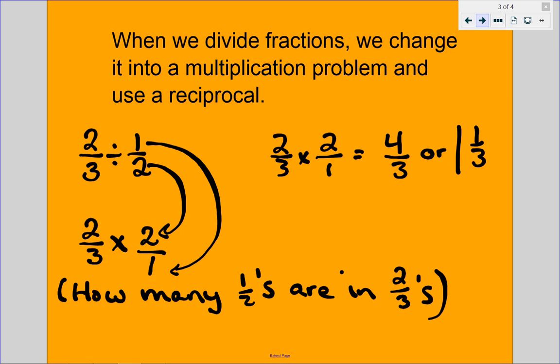Now, when we divide fractions, what we do to find the answer is we change it into a multiplication problem, and we use a reciprocal. We take the second number and make it into its reciprocal. Remember, this is the opposite. 1 half, the opposite of 1 half is 2 over 1, that's its reciprocal.